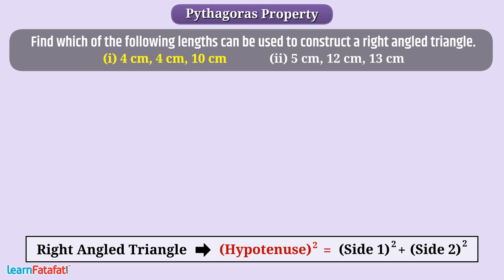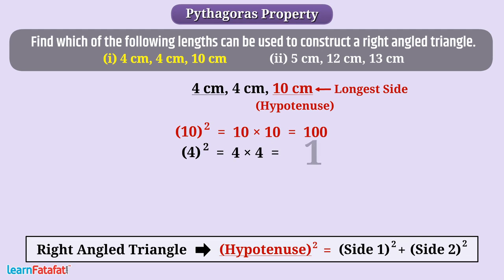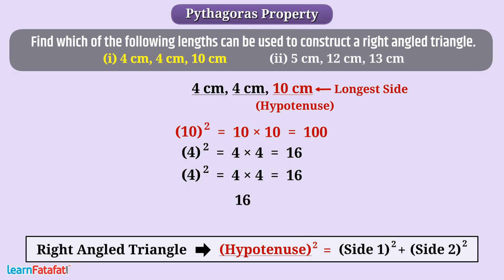Let's talk about the first part of this question. In the first part, the longest side is 10 cm, so it must be the hypotenuse. Square of hypotenuse: 10 squared is equal to 10 multiplied by 10, which is 100. Square of one leg: 4 squared is equal to 4 multiplied by 4, which is 16, same as the square of the other leg. We can see that 16 plus 16 is not equal to 100. That means 10 squared is not equal to 4 squared plus 4 squared. Hence, a triangle with sides 4 cm, 4 cm, and 10 cm is not a right angle triangle.